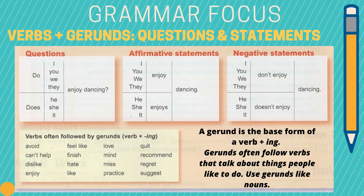So let's look at our grammar focus for today's lesson. Our grammar focus is verbs and gerunds, questions and statements. It's important first to call your attention to what a gerund is. A gerund is the base form of a verb plus -ing. A gerund is different than the verb in the present continuous, so don't confuse a gerund with the verb form and an -ing. The difference is that gerunds often follow verbs that talk about things that people like to do. We use gerunds more like nouns than we do verbs.